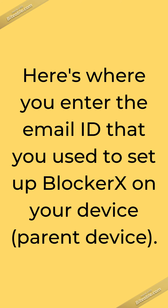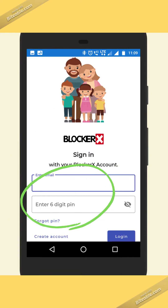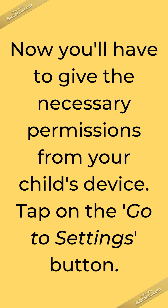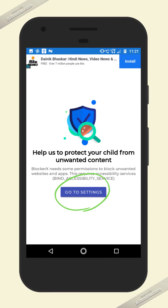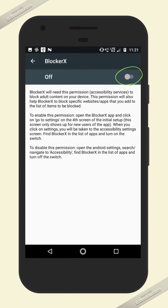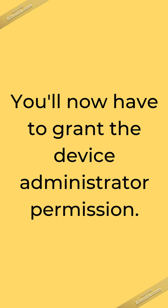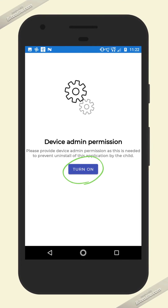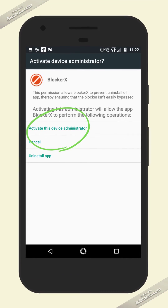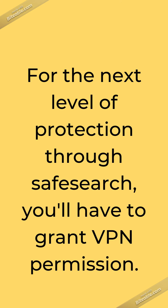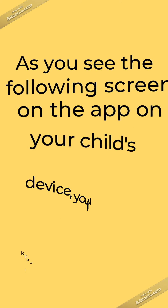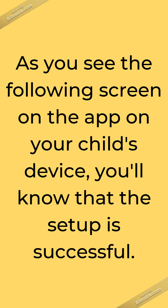Here's where you enter the email ID that you used to set up BlockerX on your device. Now you'll have to give the necessary permissions from your child's device — tap on the 'Go to Settings' button, then tap on the button to grant the accessibility permission. You'll now have to grant the device administrator permission; tap on the 'Activate this Device Administrator' option to grant access. For the next level of protection through safe search, you'll have to grant VPN permission. As you see the following screen on the app on your child's device, you'll know that the setup is successful.